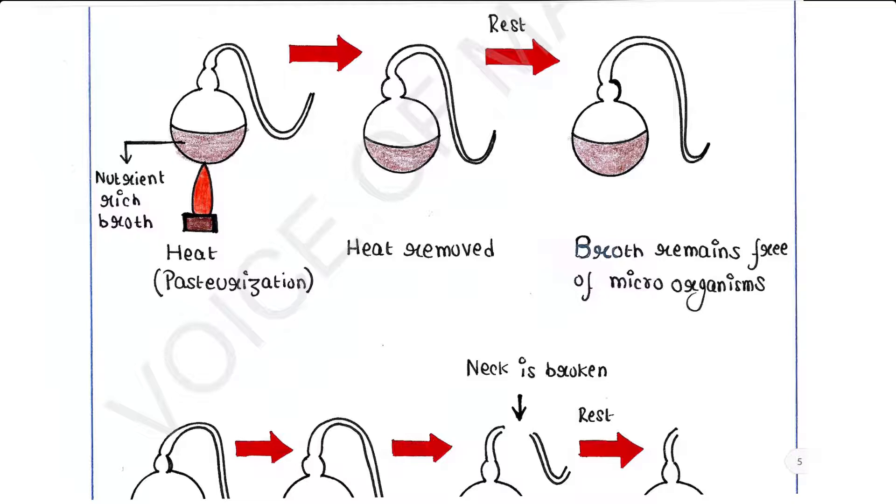Pasteur conducted a very famous experiment in which he used a glass flask with an S-shaped neck, called swan neck flask, because the neck of the flask is S-shaped like the neck of swan. He partly filled the flask with a nutrient-rich yeast containing broth. He then boiled the broth to kill any germ that is already present in the broth, and this process is known as pasteurization.